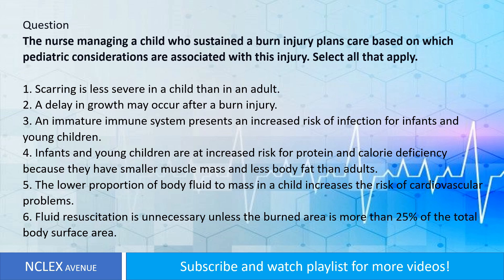The nurse managing a child who sustained a burn injury plans care based on which pediatric considerations are associated with this injury. Select all that apply. 1. Scarring is less severe in a child than in an adult. 2. A delay in growth may occur after a burn injury. 3. An immature immune system presents an increased risk of infection for infants and young children. 4. Infants and young children are at increased risk for protein and calorie deficiency because they have smaller muscle mass and less body fat than adults. 5. The lower proportion of body fluid to mass in a child increases the risk of cardiovascular problems. 6. Fluid resuscitation is unnecessary unless the burned area is more than 25 percent of the total body surface area.